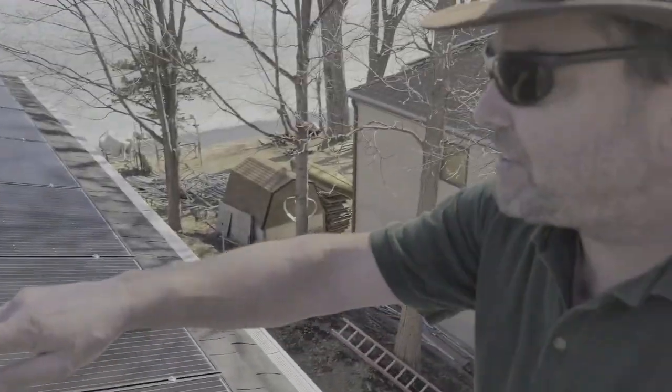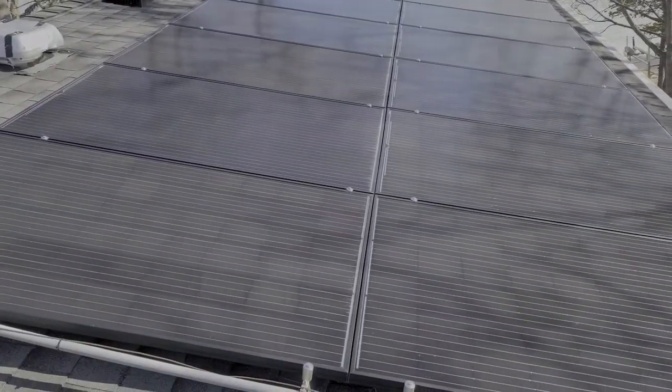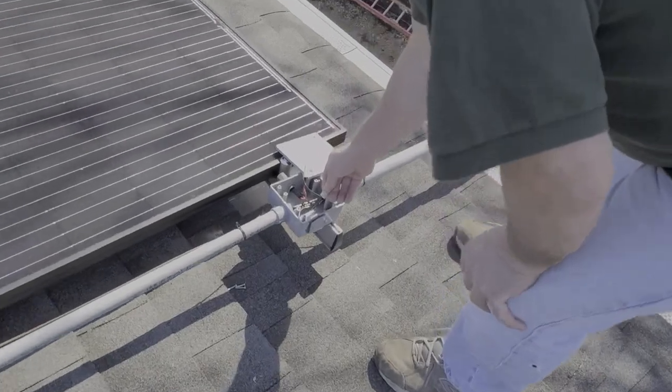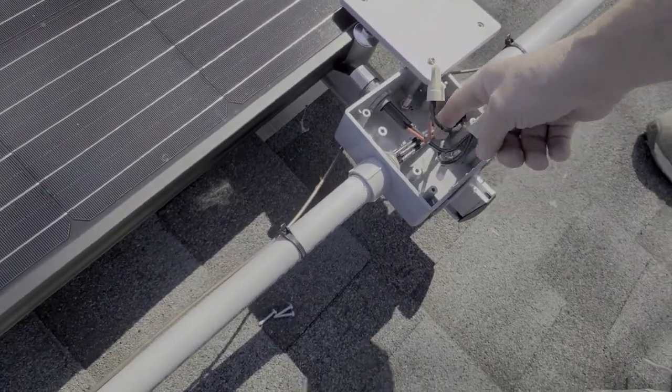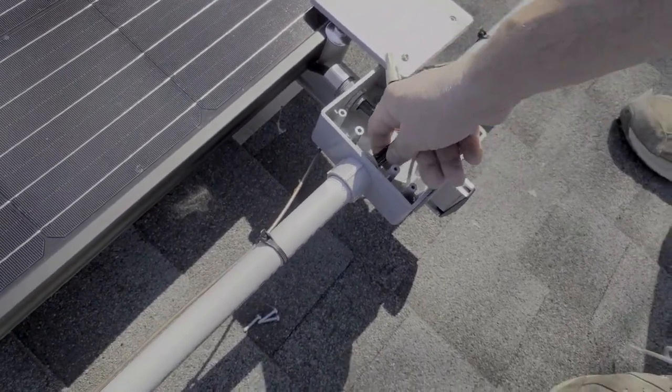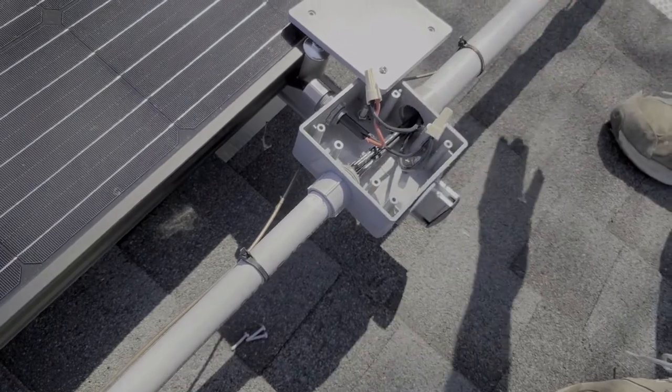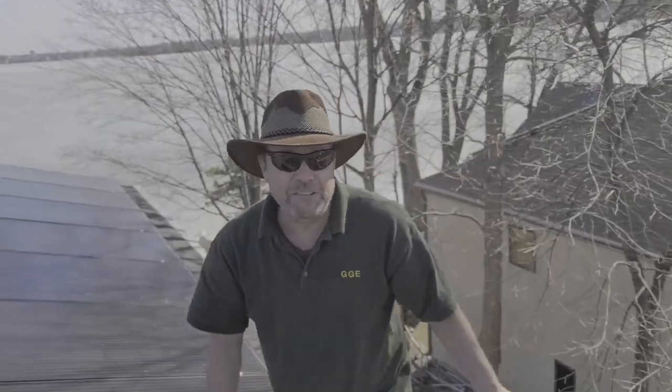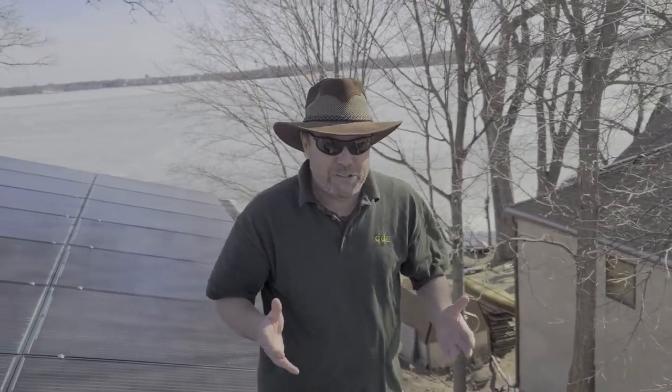Now for my last string here I've got the same thing, a positive and a positive coming out, run into 12 gauge, and then the other two strings, four wires, just run right through this box. Well let's get down to the side of the house and let's see how this stuff all hooks up.